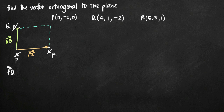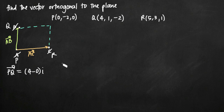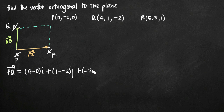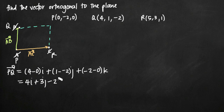To find vector PQ, we take the components of Q and subtract the components of P, using the results as coefficients for i, j, and k. For the x-components: 4 minus 0 gives 4i. For the y-components: 1 minus negative 2 is 1 plus 2, or 3, giving plus 3j. For the z-components: negative 2 minus 0 is negative 2, giving minus 2k. So vector PQ = 4i + 3j - 2k.